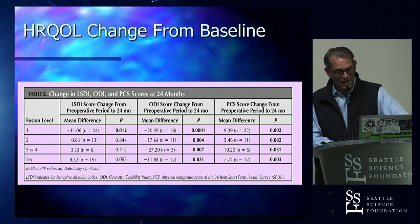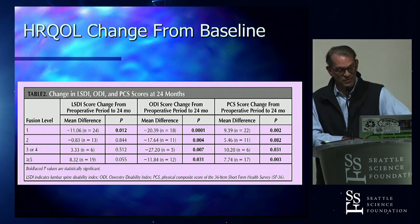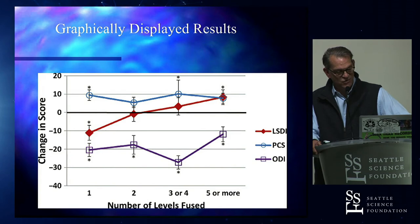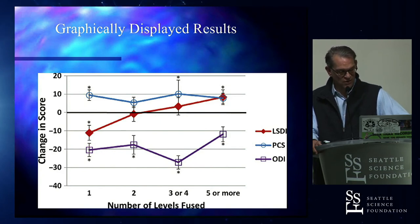For five-or-more-level fusions, there was an increase in stiffness that almost reached significance but not quite. Looking at ODI and the PCS functional score from the SF-36, those scores all trended toward improvement for all four fusion groups and as a mean all reached MCID differences. The graphical display shows the LSDI score decreasing for one-level fusions, staying about the same at two levels, increasing for five-plus. The PCS shows positive change across all groups; the ODI shows negative change — a good thing — across all fusion groups.